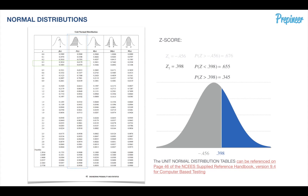We did this manually to illustrate the fundamentals of the normal distribution curve. But if you go to the Rx column — the next column over — you can see how the z-score of 0.398 falls right between the values for 0.3 and 0.4 at 0.345, confirming our result.